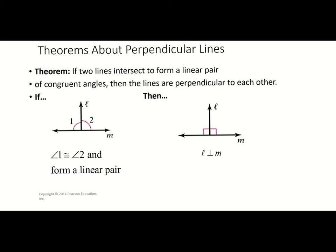Our next theorem says: if two lines intersect to form a linear pair of congruent angles, then the lines are perpendicular to each other. If you have a linear pair with two congruent angles, those two angles must each be 90 degrees, and therefore the lines forming them are perpendicular.